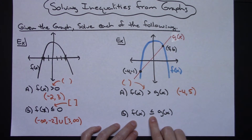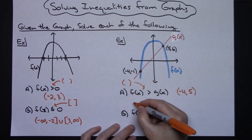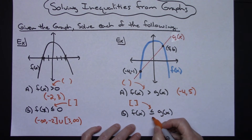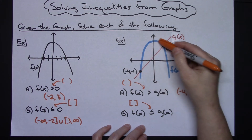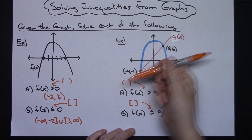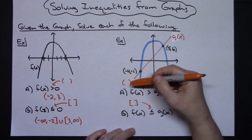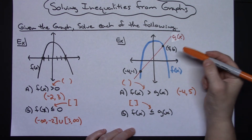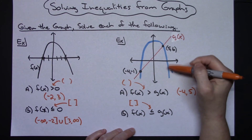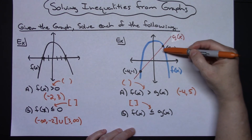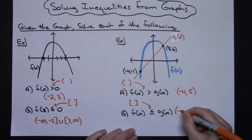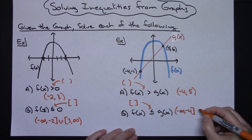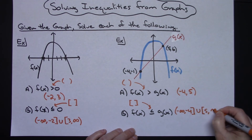Part B: where is f of x less than or equal to g of x? I need square brackets because of the equal to part. Where is the f function below the g function? It's below over here — this is a rough sketch of a parabola going down but also going to the left as far as possible. So negative infinity all the way up to x value of negative 4, and then starting at x value of 5 going on to positive infinity. Written out: open bracket negative infinity to negative 4 square bracket, then pick it back up at 5 all the way to positive infinity.